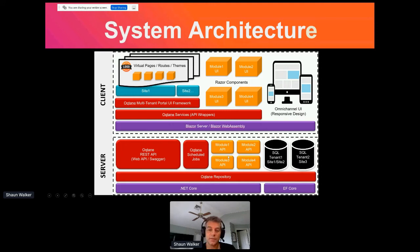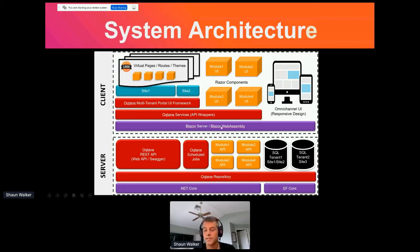Modules in the Octane world need to be split into both a client-side and a server-side component that interact with one another, and each module can have its own API. You can have multiple databases — a database per site — or put multiple sites in a single database, giving you flexibility. On the client side, Octane uses Blazor and you can configure the hosting model via the app settings JSON file. On top of that there's a set of services which are API wrappers making it very simple to call the back-end API using a strongly typed set of methods.